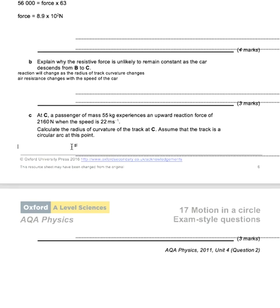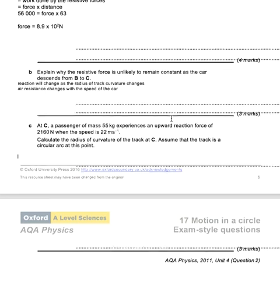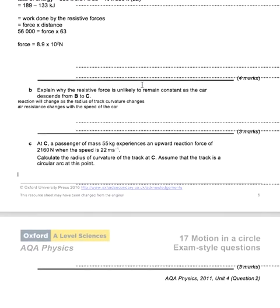Question C: A passenger of mass 55 kilos experiences an upward reaction of 2160 newtons when the speed is 22 meters per second. Calculate the radius of curvature of the track at C. Assume the track is a circular arc at this point. At this point we have a force of 2160 reaction. The resultant of the forces on the rider at this point is the centripetal force. So we have the resultant inwards, 2160 minus the weight of the rider. That's our centripetal force.